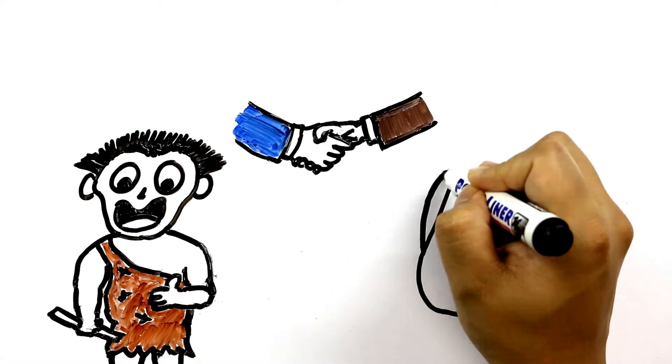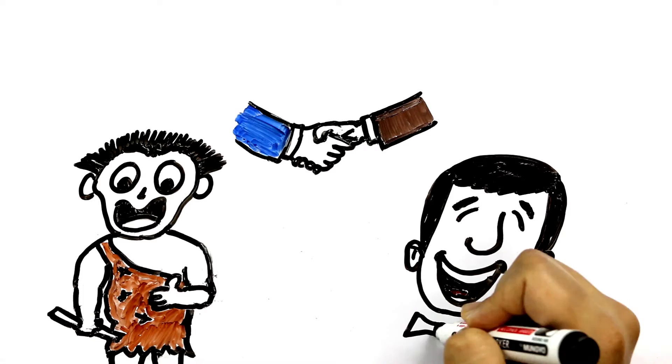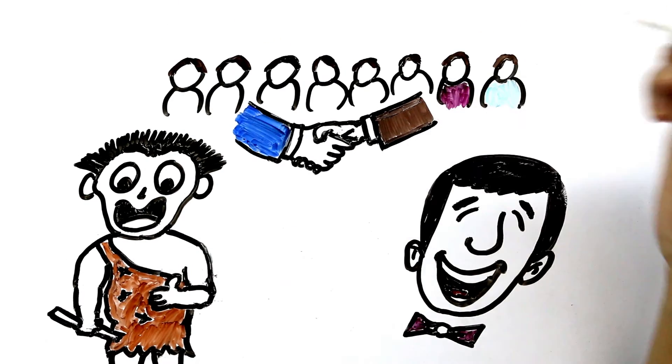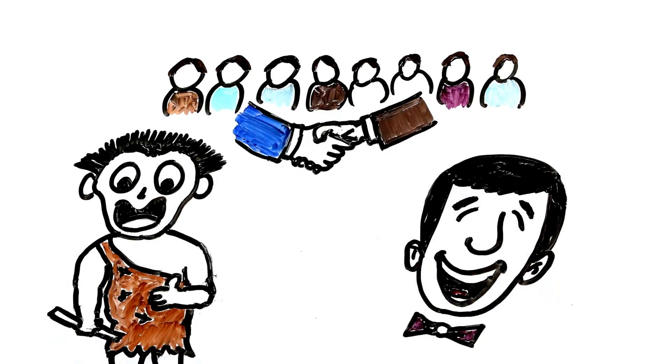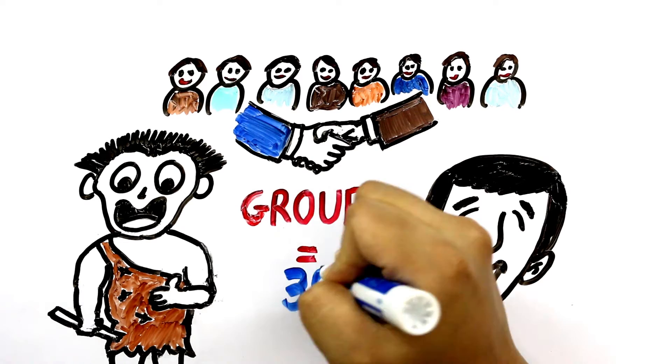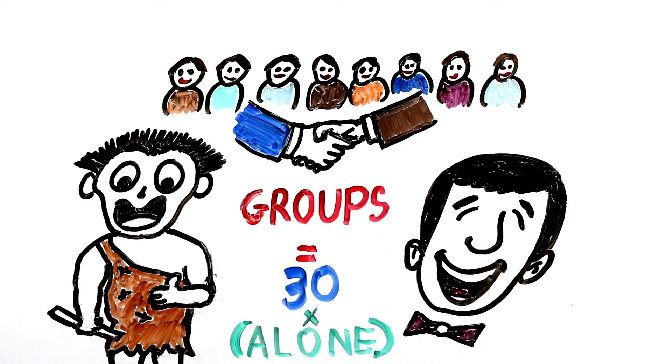A 1974 study found that people were more likely to find jokes funny when they were followed by recorded laughter. It's the same reason why you laugh more watching a comedy in a crowded theatre than you do watching the same movie alone at home. According to neuroscientists, laughter is 30 times more frequent when people are in groups compared to when they were alone.